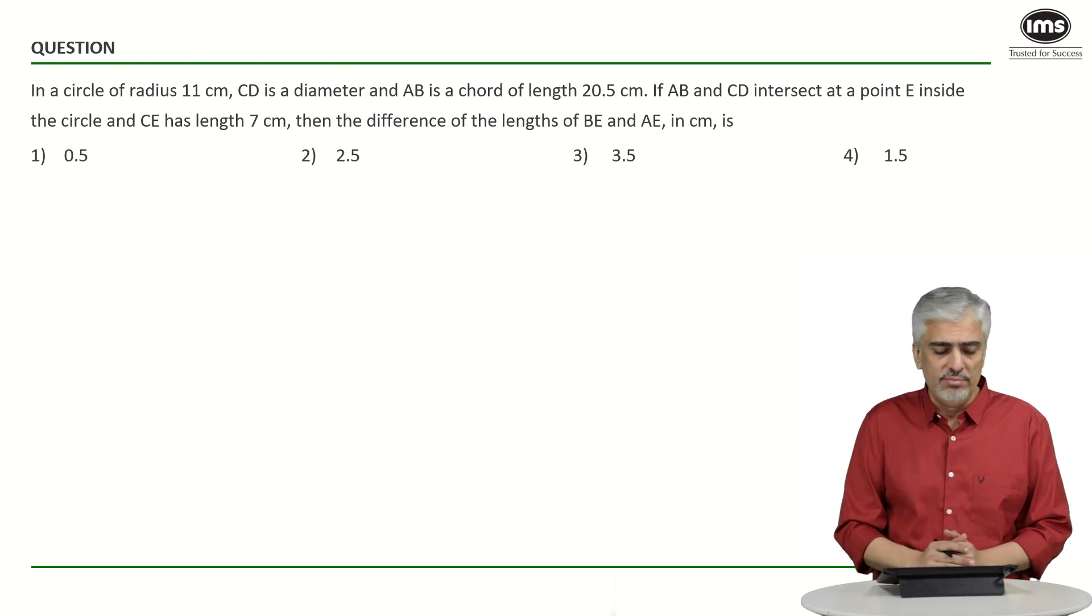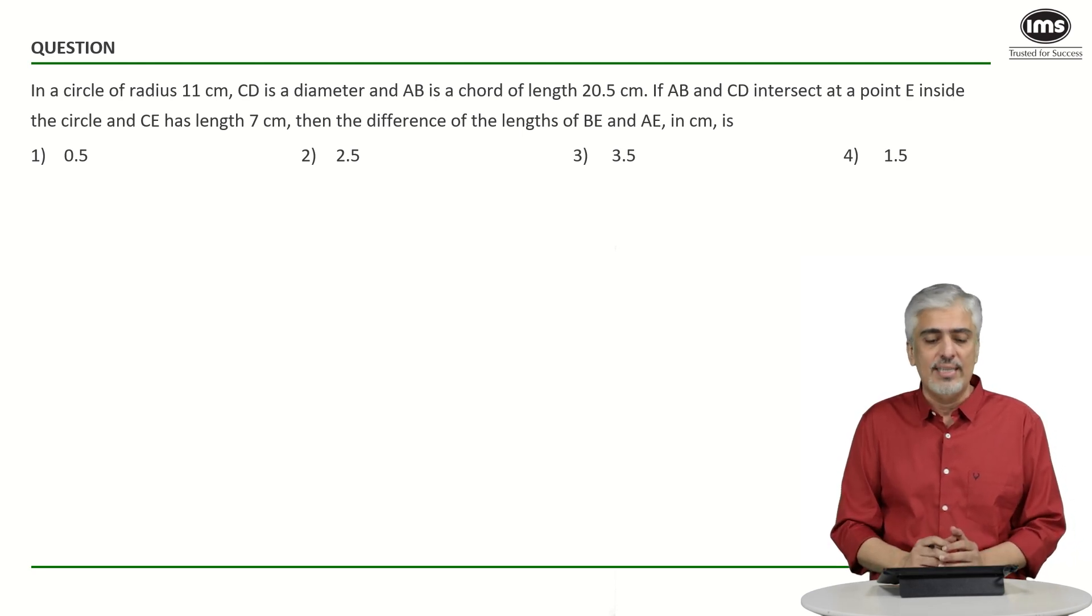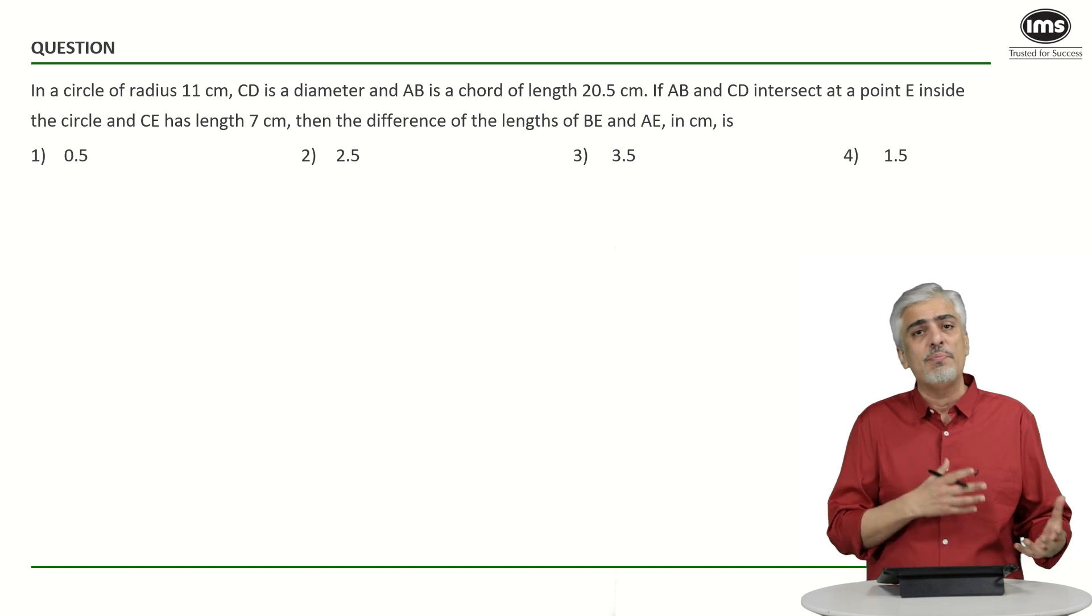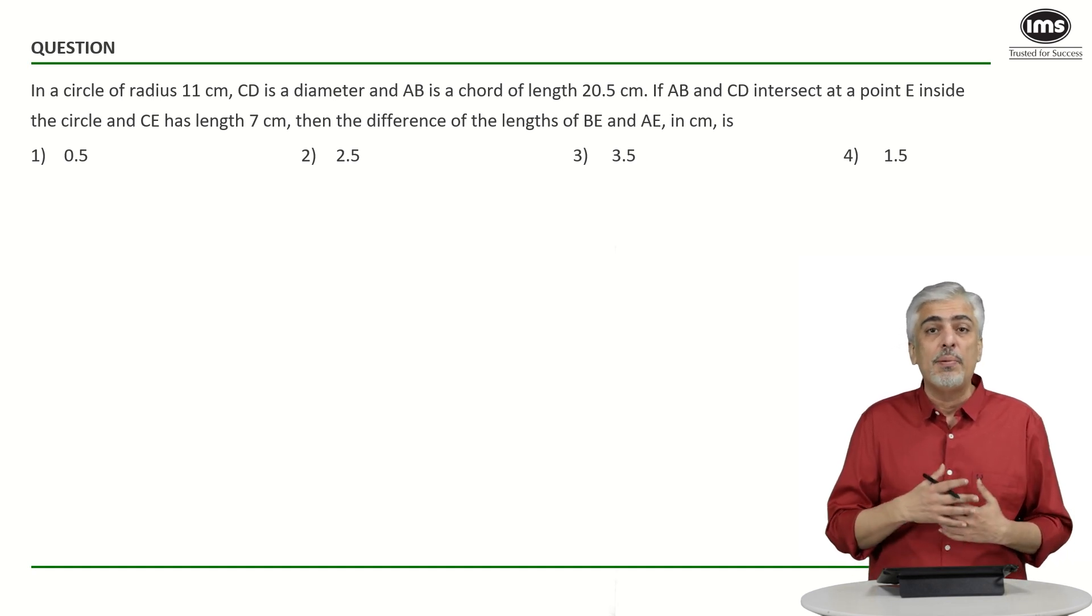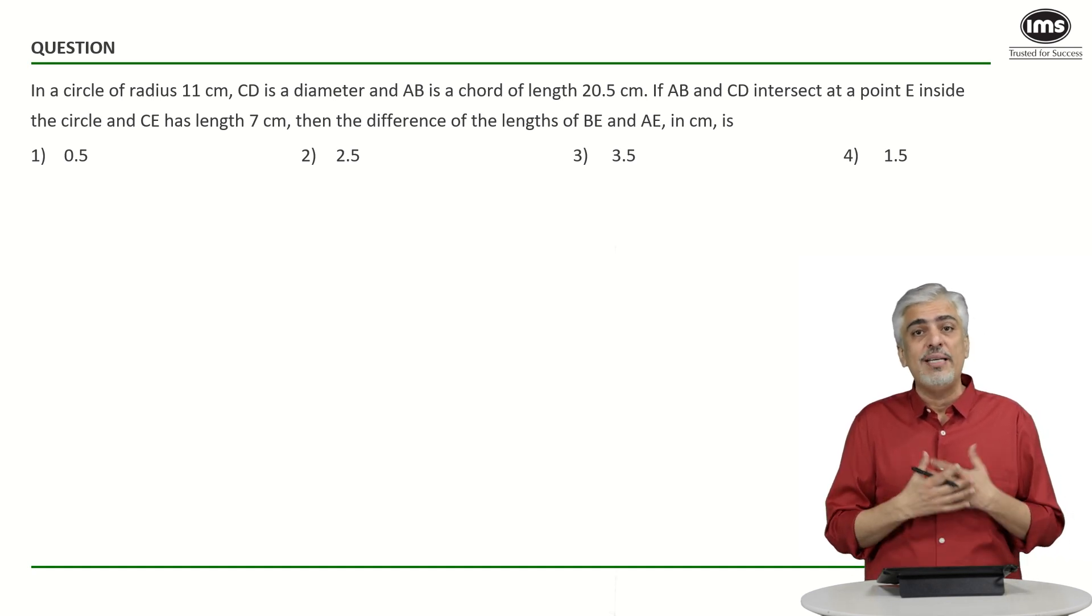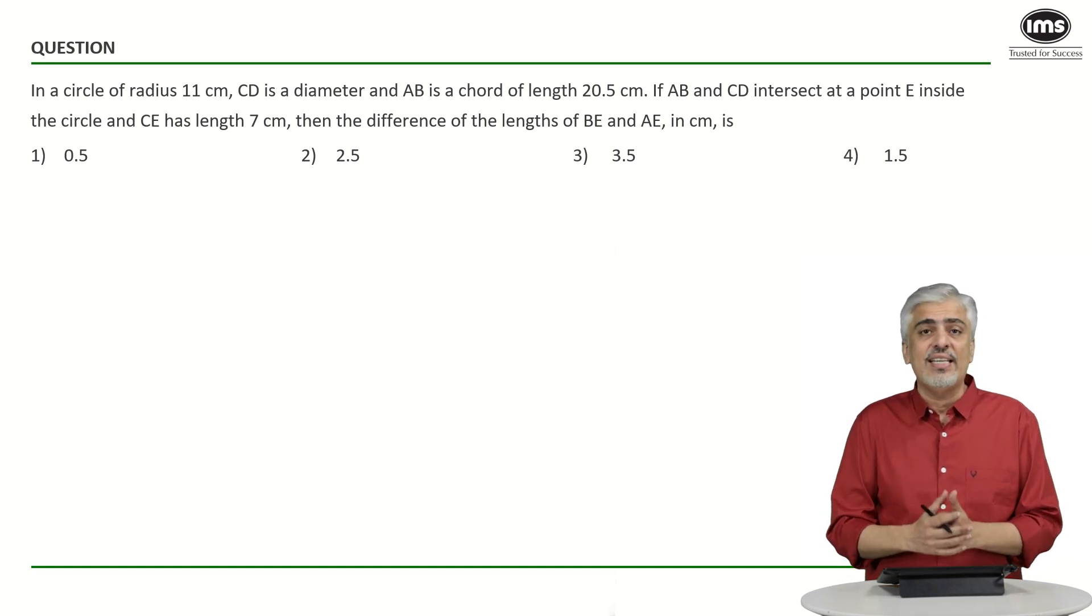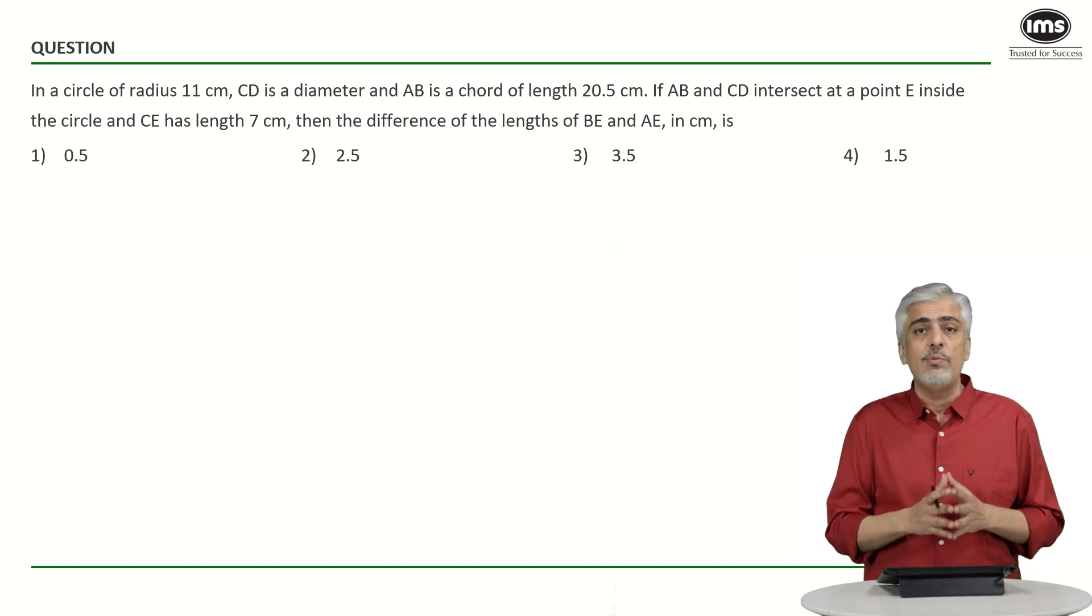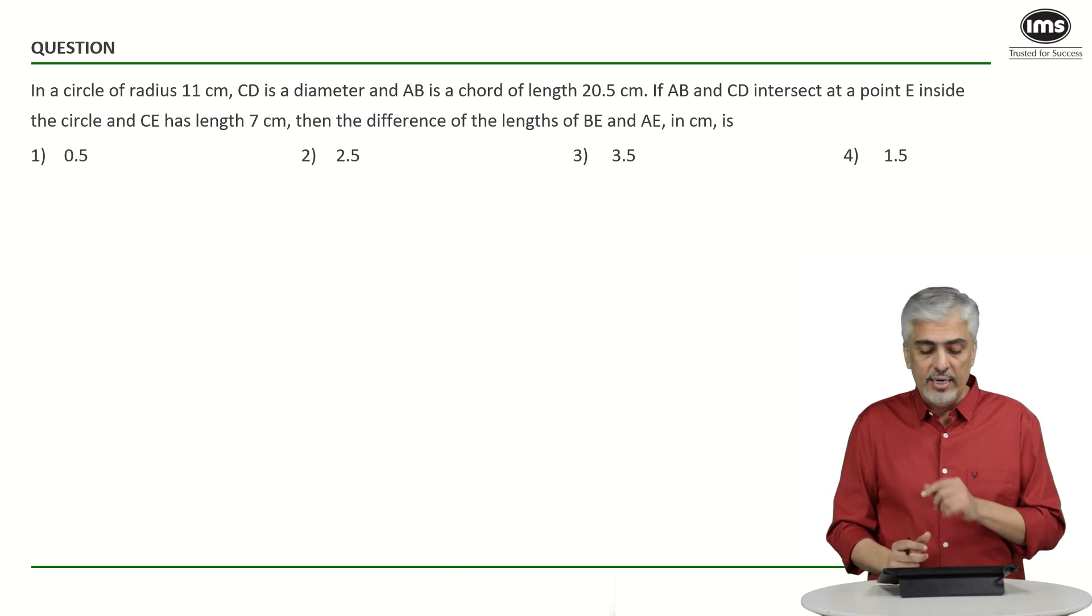The first question says: In a circle of radius 11, CD is the diameter, so diameter is 22. The chord AB has length 20.5. We haven't been told where the chord is—it could be parallel to the diameter, perpendicular, or just intersecting regularly. They've said intersecting, so at least it's not parallel, but we don't know if it's perpendicular. AB and CD intersect at point E inside the circle, and CE has length 7.